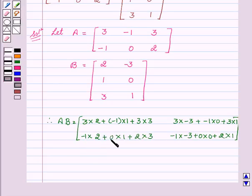Similarly we can write for the second row which is minus 1 into 2 plus 0 into 1 plus 2 into 3, minus 1 into minus 3 plus 0 into 0 plus 2 into 1.